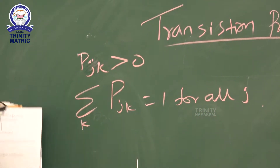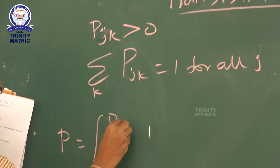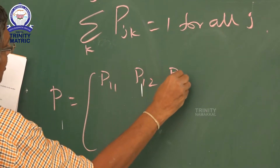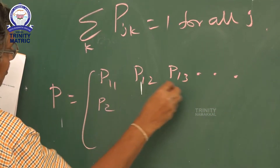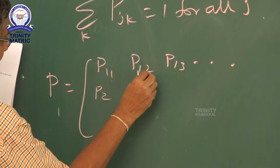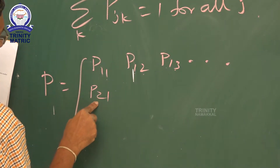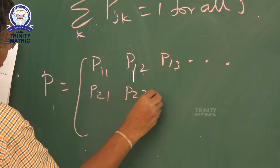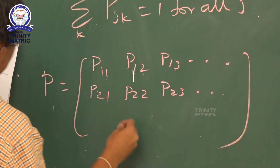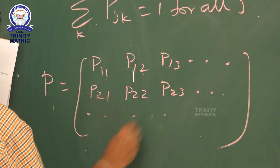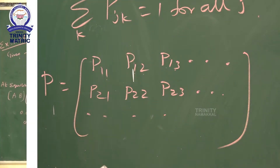The probability matrix is written in the form: P11, P12, P13, and so on for the first row. First row first column, first row second column, first row third column, like this. Second row first column, second row second column, and so on. This is a general transition probability matrix.